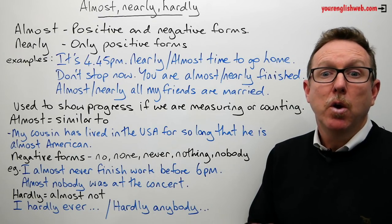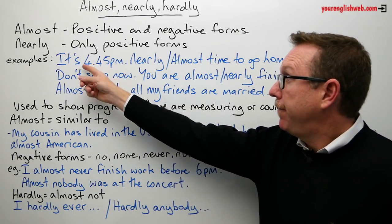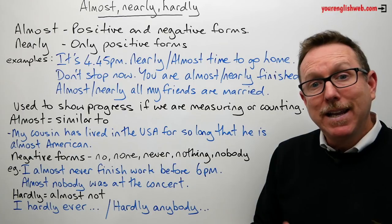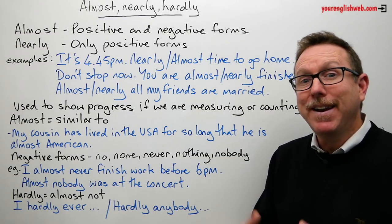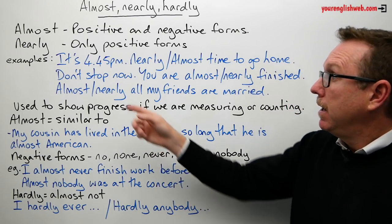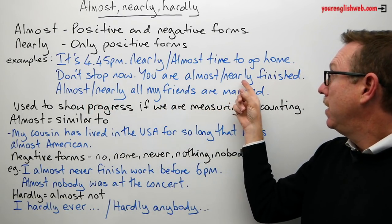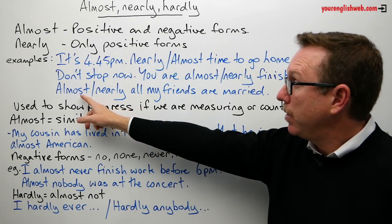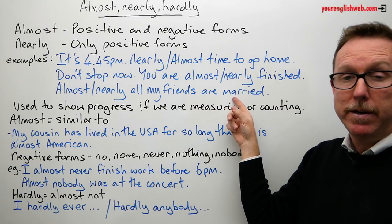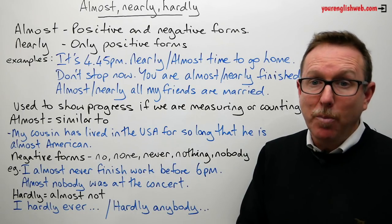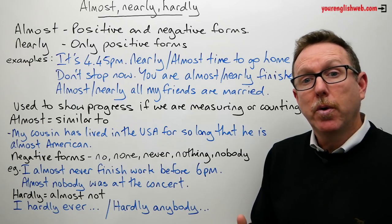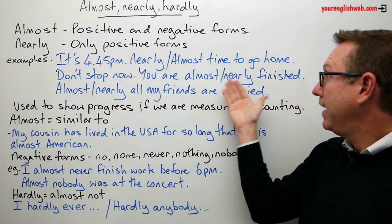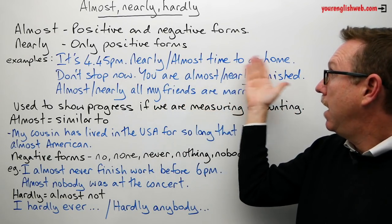Let's look at examples where we can use both interchangeably with no difference in meaning. First: it's 4:45 p.m., so it's nearly or almost time to go home — not yet, but nearly or almost. Second: 'Don't stop now, you're almost or nearly finished.' Third: 'Almost all my friends are married' or 'Nearly all my friends are married.' We can use both adverbs the same way in these cases.